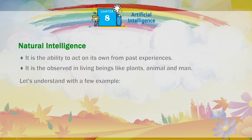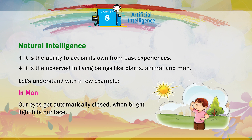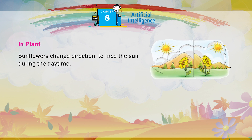Natural intelligence is the ability to act on its own from past experiences. It is observed in living beings like plants, animals, and man. For example, in man, our eyes get automatically closed when bright light hits our face. In plants, sunflowers change direction to face the sun during the daytime.